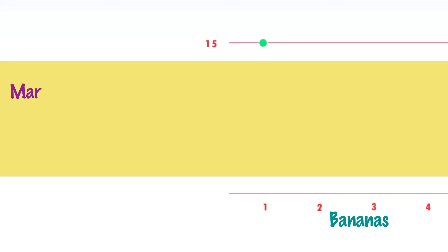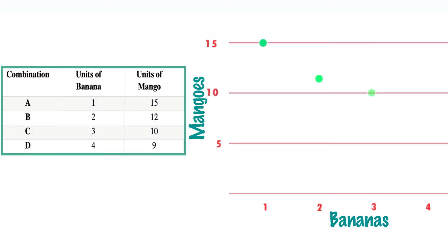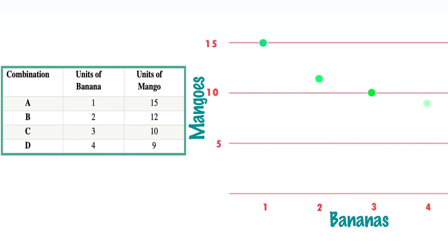The above is also called the marginal rate of substitution. In other words, it is the rate at which the number of units of mango that can be substituted for commodity banana, leaving the consumer at the same level of satisfaction. In our case, if we compare combinations A and B, we can see that one unit of banana has substituted 3 units of mango so that the satisfaction remains the same. We also notice that as the consumption of banana increases, the marginal utility derived from each unit of banana decreases, as explained in our earlier video. Therefore, with increase in consumption of banana and decrease in its marginal utility, the additional units of mango sacrificed are also reduced.